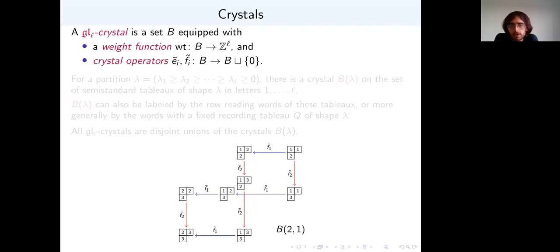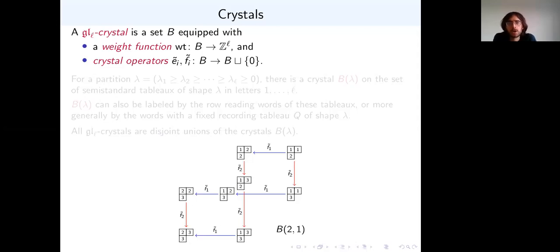Now I want to start with an introduction to crystals, and then we'll see a little bit about how they're connected to Catalan functions. I'm going to work with GL_L crystals — finite type A crystals. These are maybe the best place to start if you're learning crystal theory. Some of the best references from the combinatorial perspective are Hong-Kang Chapter 7 and Shimozono's crystal for dummies notes.